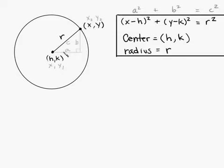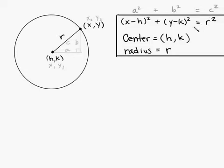And really it's derived from the Pythagorean Theorem. This is the standard form of the equation: x minus h, quantity squared, plus y minus k, quantity squared, is equal to r squared. The center is (h, k) and the radius is r.